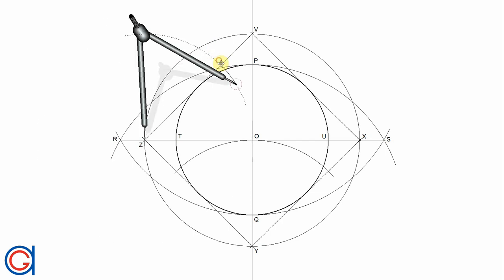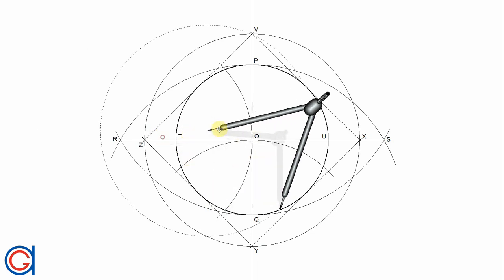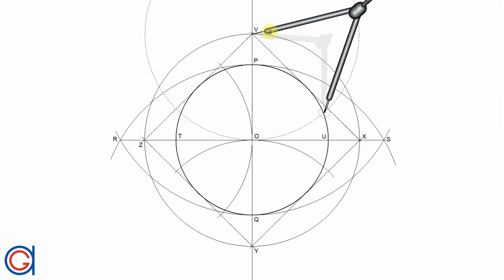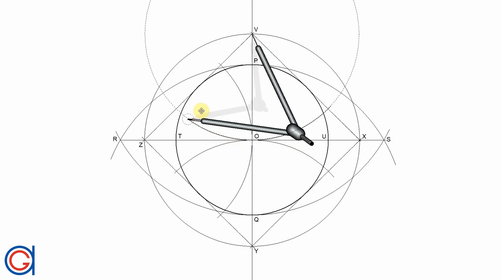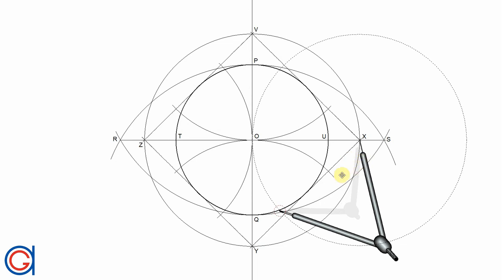And again setting the compass on Z, we scribe another semicircle getting two new vertices and continuing setting the compass on V, we scribe our third semicircle getting another two vertices on the octagon that we are going to draw.